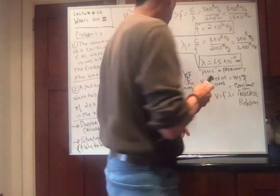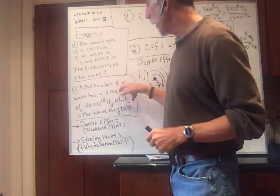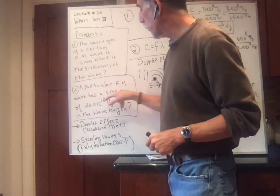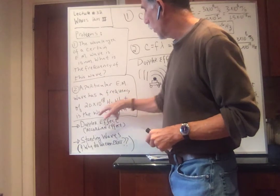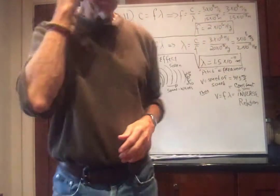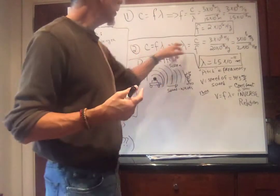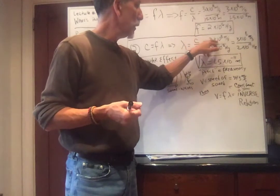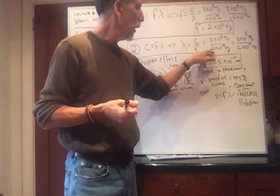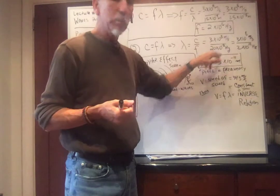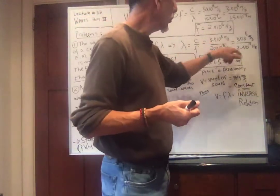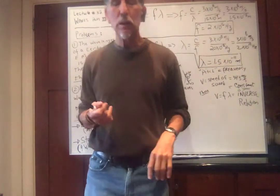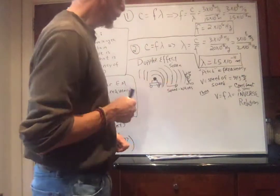Second quick review problem. A particular EM wave has a frequency of 20 times 10 to the 18th hertz. What is the wavelength? We know C and F, and we want to find lambda. C equals three times 10 to the eighth meters per second divided by 20 times 10 to the 18th hertz, and I get 1.5 times 10 to the minus 11 meters. So it's very energetic.